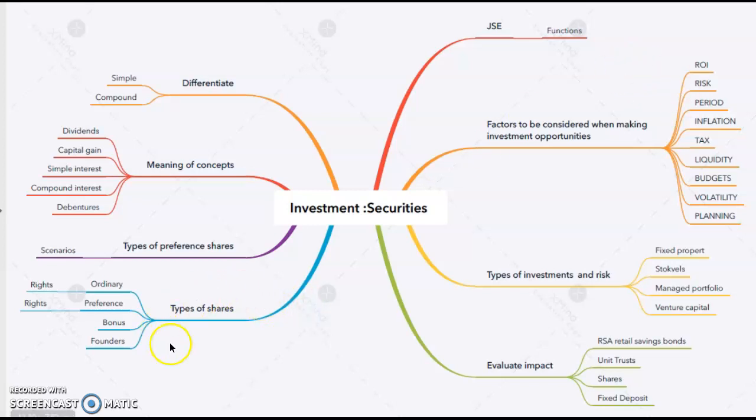Then we move on to the types of shares. There are four types of shares: ordinary, preference, bonus, and founders. You're going to be asked to identify these types of shares from different scenarios given to you. However, you also need to know what the rights are for ordinary and preference shares.